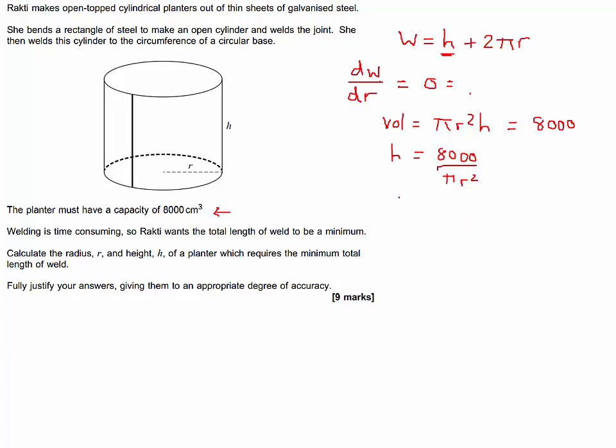So we can now rewrite our welding formula as, when we're differentiating it's better to bring the R squared up isn't it? So we write it as R to the minus 2 and then plus 2 pi R.